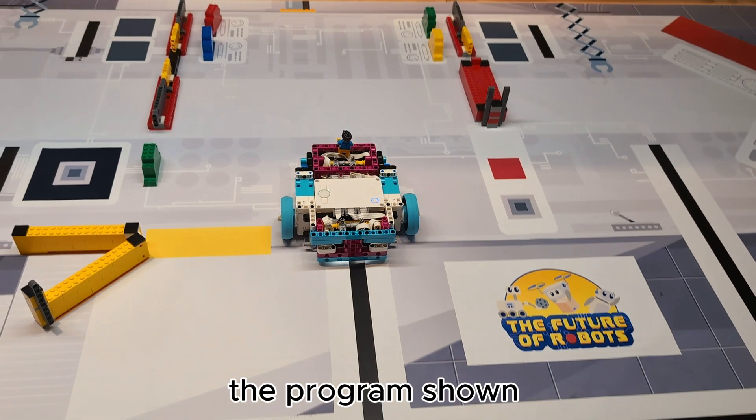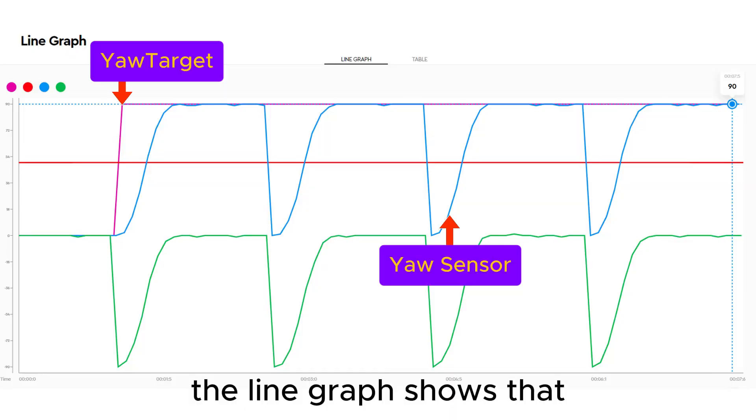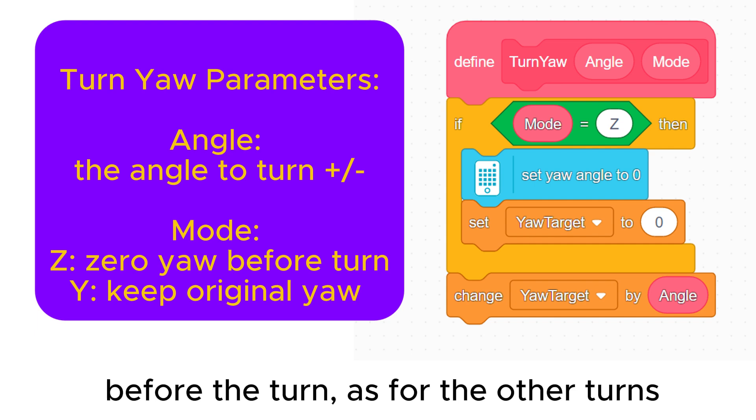The program shown will turn 90 degrees clockwise four times. The line graph shows that even with setting the yaw to zero the turn works very well. We can of course add the possibility to select with or without yaw zero before the turn as for the other turns.